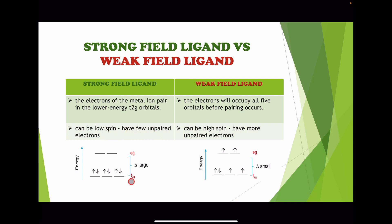Here we see the delta, which is the crystal field splitting energy. The EG level and the T2G level are shown, and the delta for the crystal field splitting energy is large for strong field ligands.